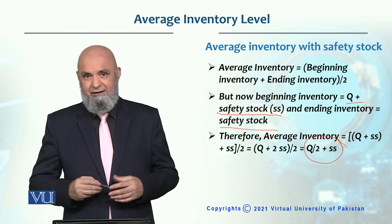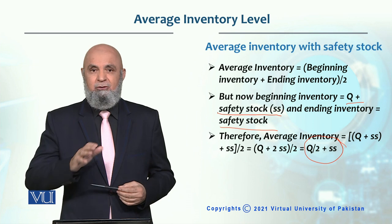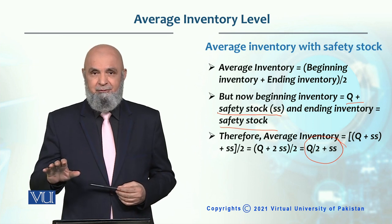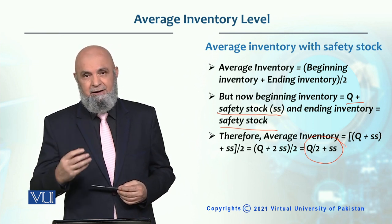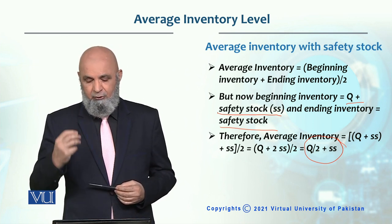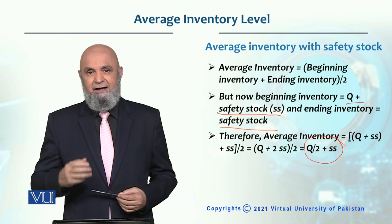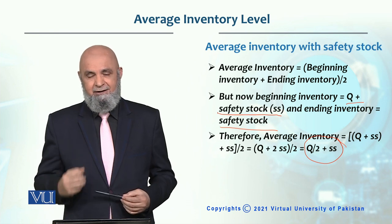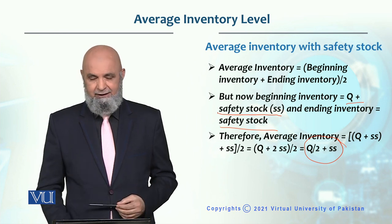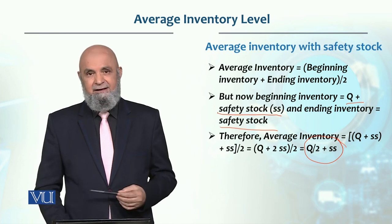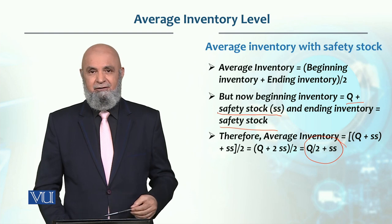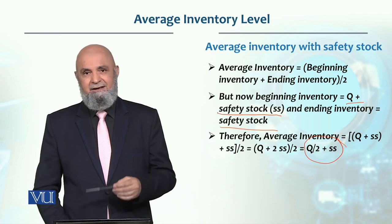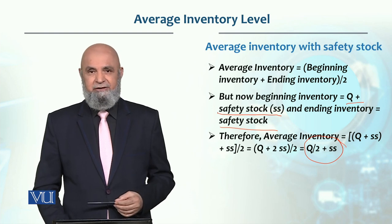Our assumption is that throughout the year, we will incur inventory holding costs throughout the year. So that is why the average inventory will be inclusive of the safety stock.